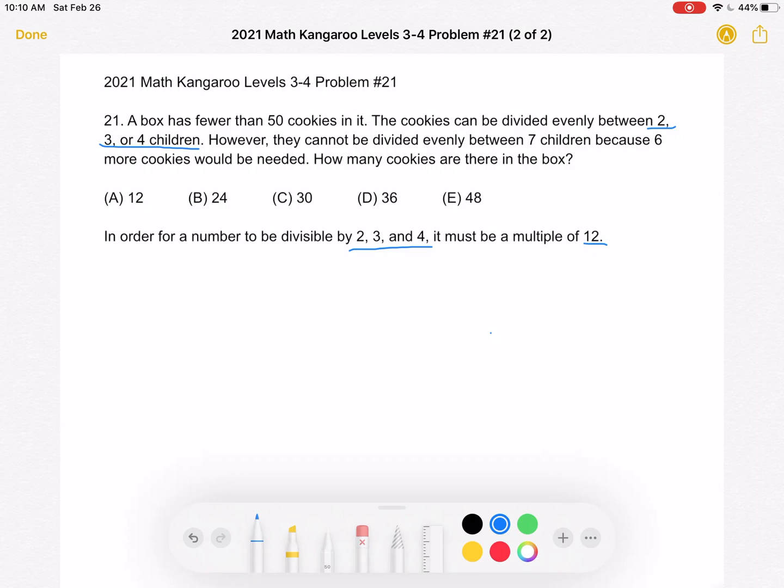However, we must also keep in mind that our number is less than 50. So let's look at the multiples of 12 that are less than 50. We have 12, 24, 36, and 48.